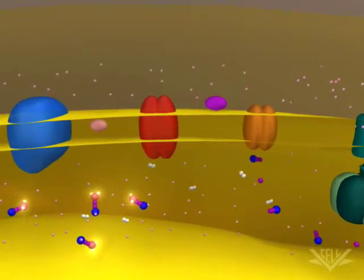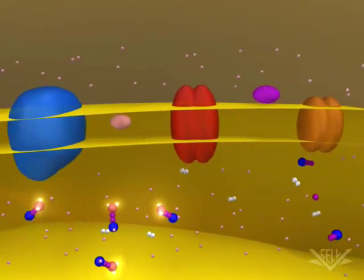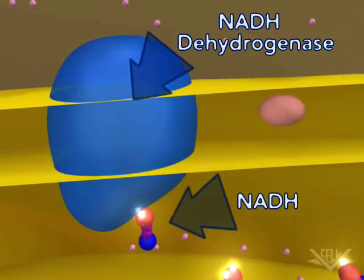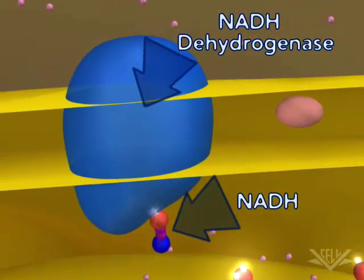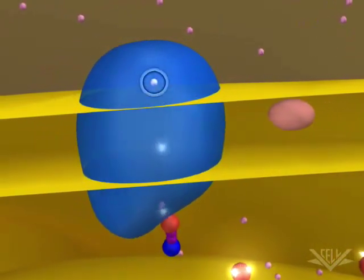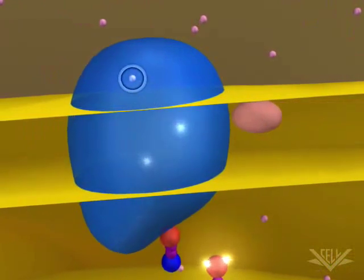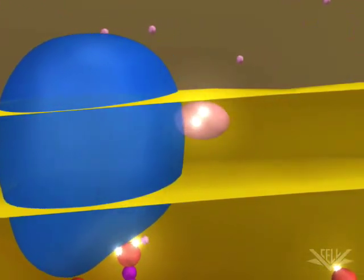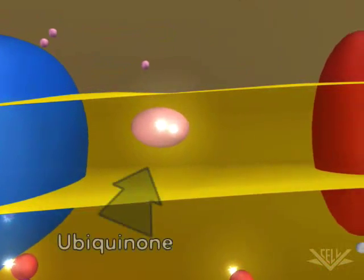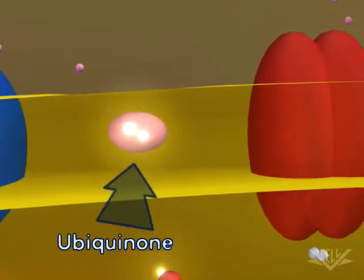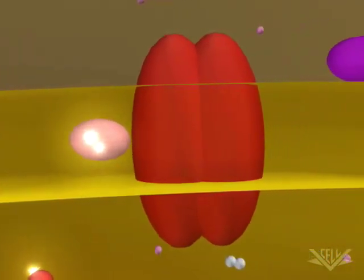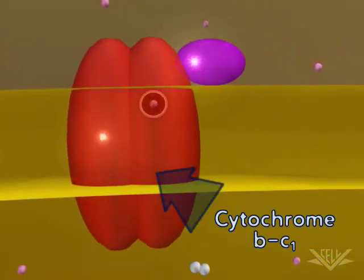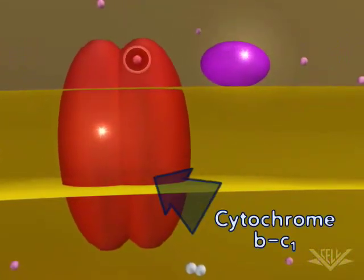At the start of the electron transport chain, two electrons are passed from NADH into the NADH dehydrogenase complex. Coupled with this transfer is the pumping of one hydrogen ion for each electron. Next, the two electrons are transferred to ubiquinone.